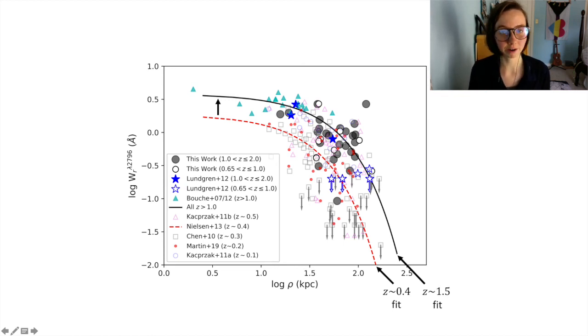Everything that we're comparing our data with have also been absorption selected. Blind searches, on the other hand, have not shown much evidence of redshift evolution when comparing to studies at intermediate redshifts.